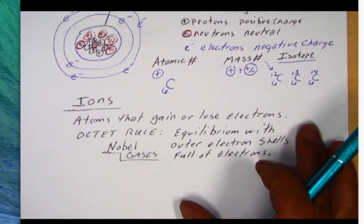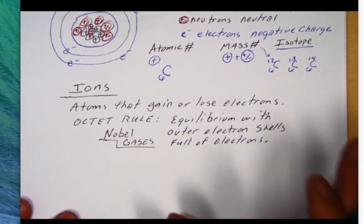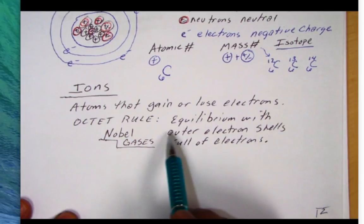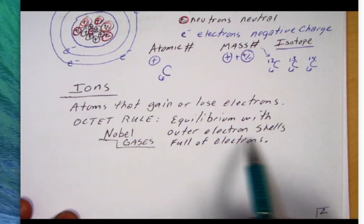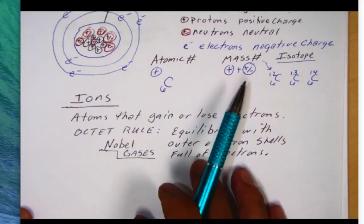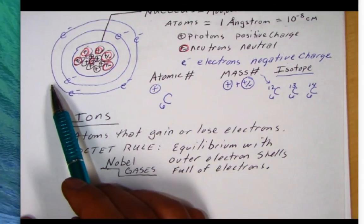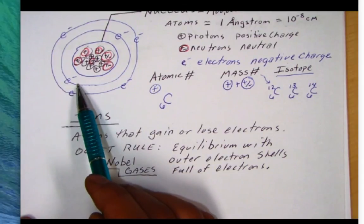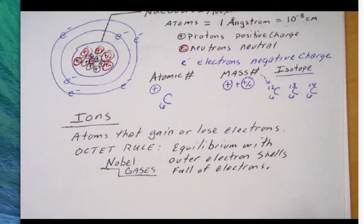Now, some atoms tend to lose or gain electrons because they want to have their, in fact, we call it the octet rule. They want to have equilibrium with their outer electron shells full of electrons. Like this carbon atom, it's very reactive because it needs another four electrons in this outer shell to make eight. The first shell has two. Subsequent shells can have up to eight. So it's going to bond with many different other atoms here on Earth. It's very reactive.